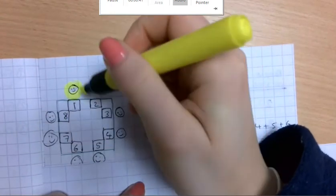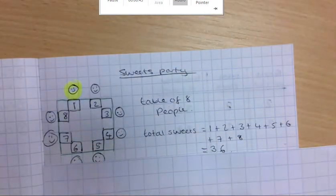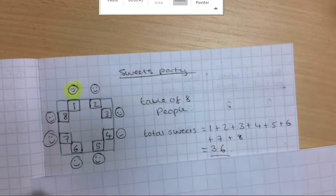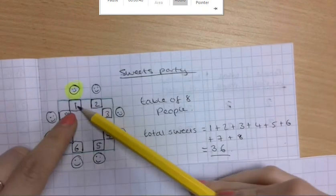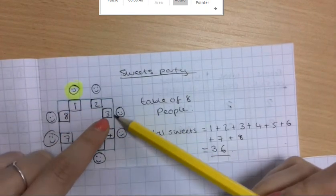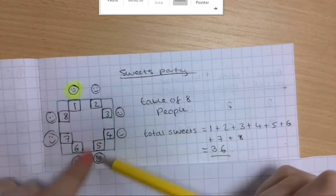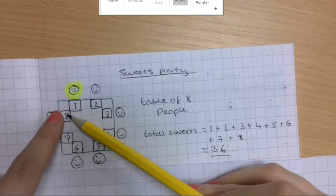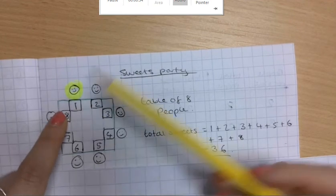So the person in this corner starts with the bag of sweets and they give one sweet to themselves, two to the person next to them, three to the person after that, four, five, six, seven, eight and it stops here because then you get back to yourself.